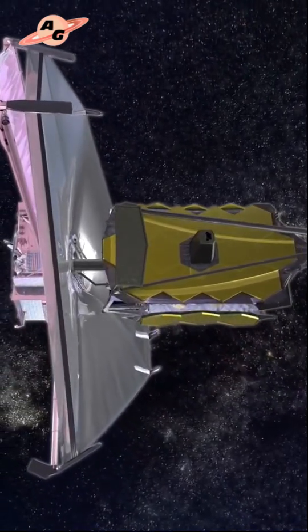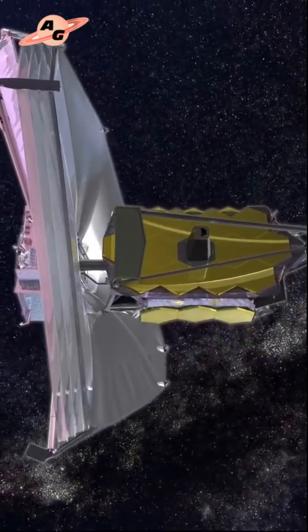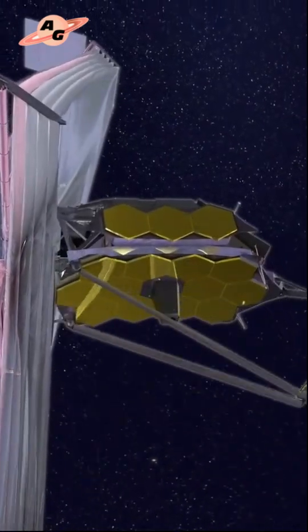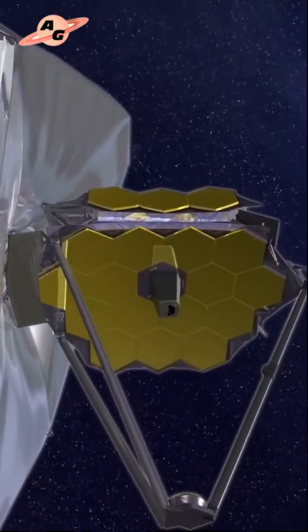Using the James Webb Space Telescope's mid-infrared instrument, MIRI, a team of scientists was able to image the star Alpha Centauri A using a coronagraph, which blocks out the star's brightness and allows much fainter objects, including potential exoplanets, to be seen.